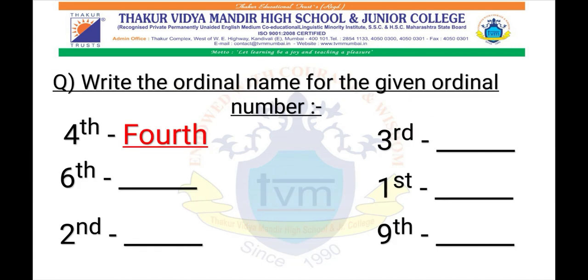Now let's write the ordinal name for the given ordinal number. 4th — F-O-U-R-T-H. The same way you read the rest of the ordinal numbers and write their names.